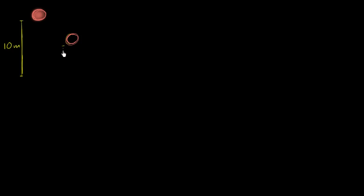So the next time around, on the next bounce, the ball is going to go 5 meters — this distance right over here is going to be 5 meters. And then the bounce after that is going to be half as high, so it's going to go 2 and a half meters. And it's just going to keep doing that, going 2 and a half meters right over here.